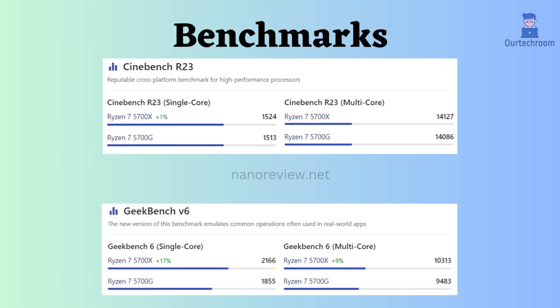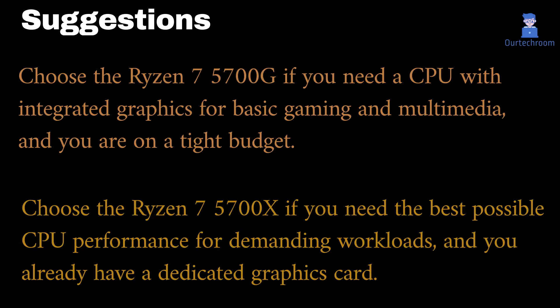My suggestions are as follows. Choose the Ryzen 7 5700G if you need a CPU with integrated graphics for basic gaming and multimedia, and you are on a tight budget. Choose the Ryzen 7 5700X if you need the best possible CPU performance for demanding workloads, and you already have a dedicated graphics card.